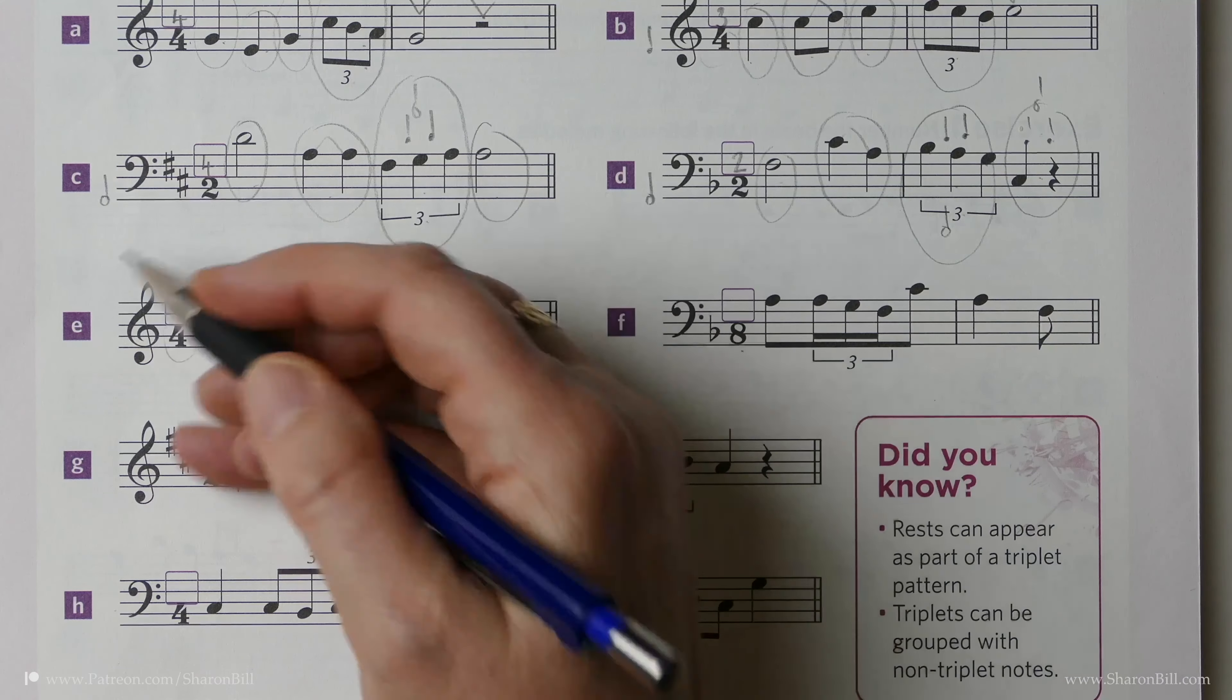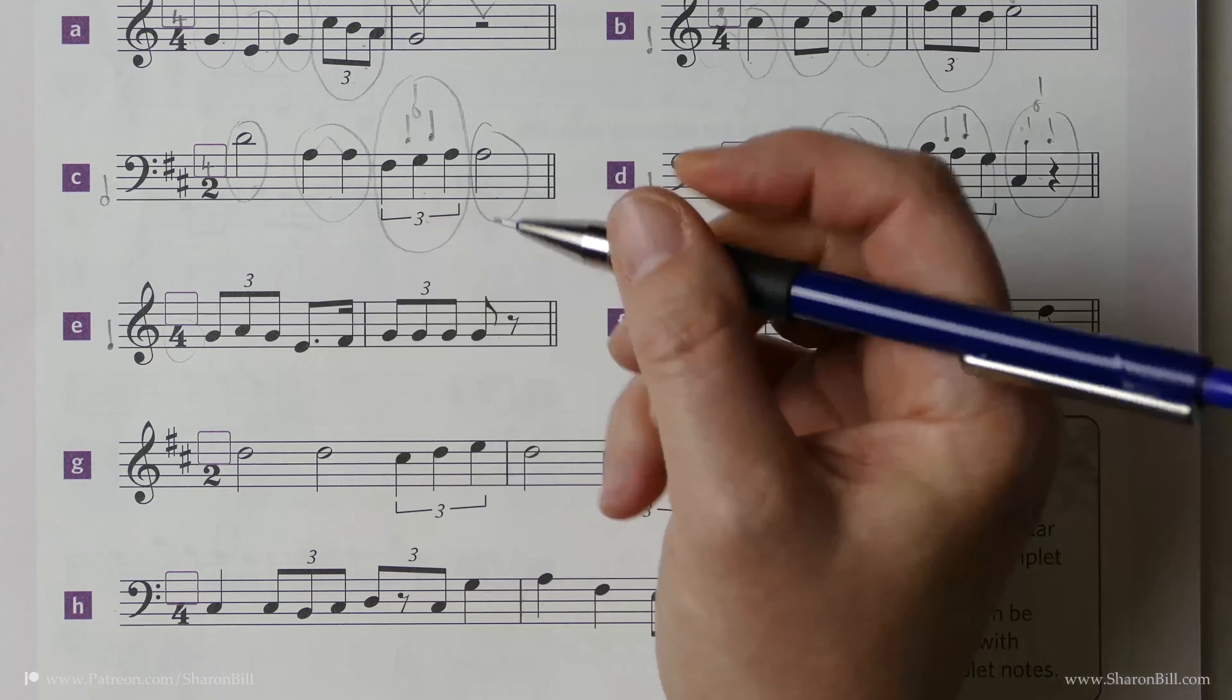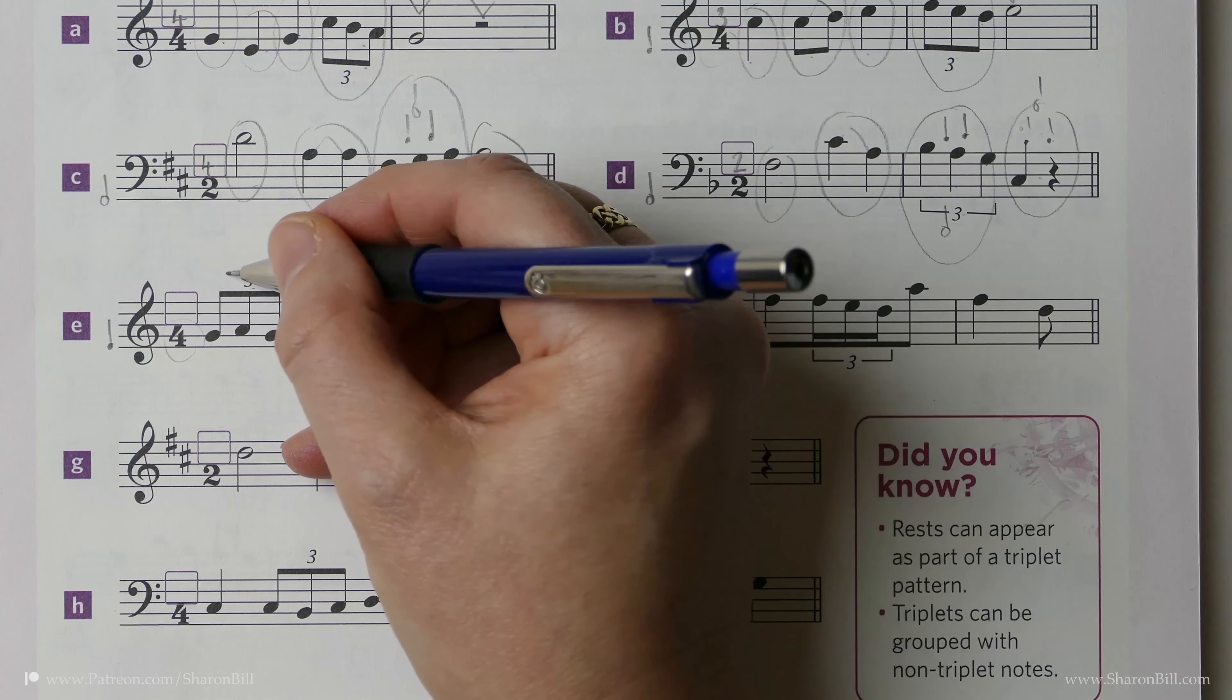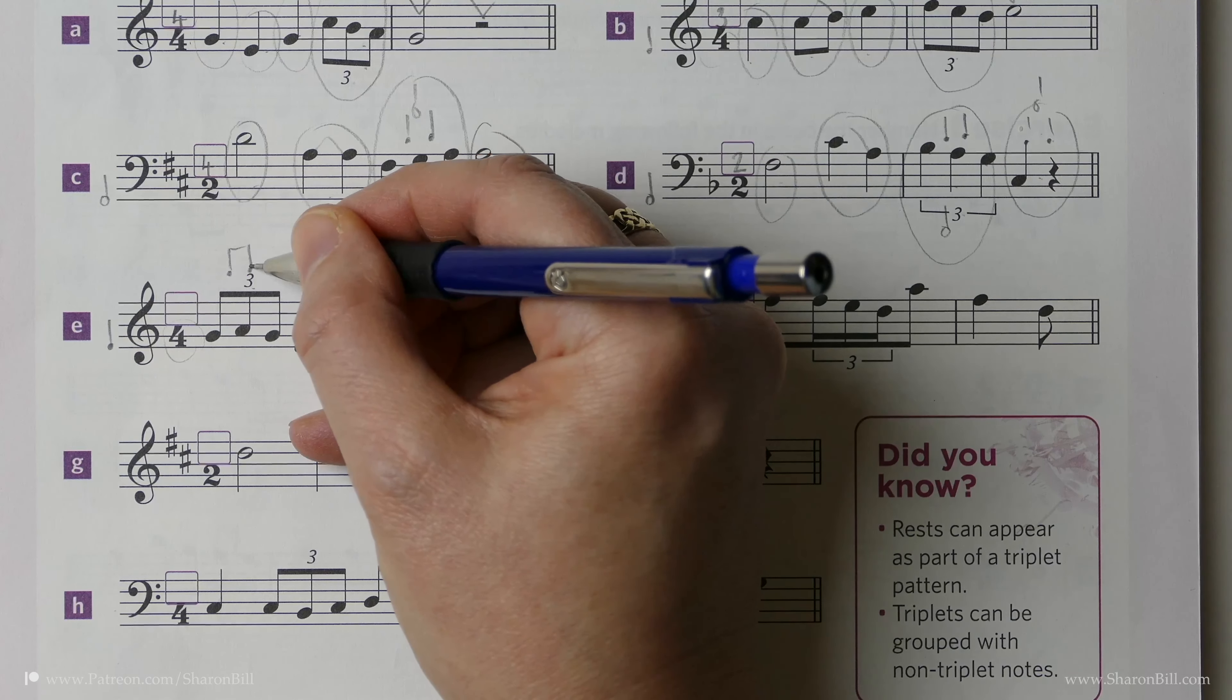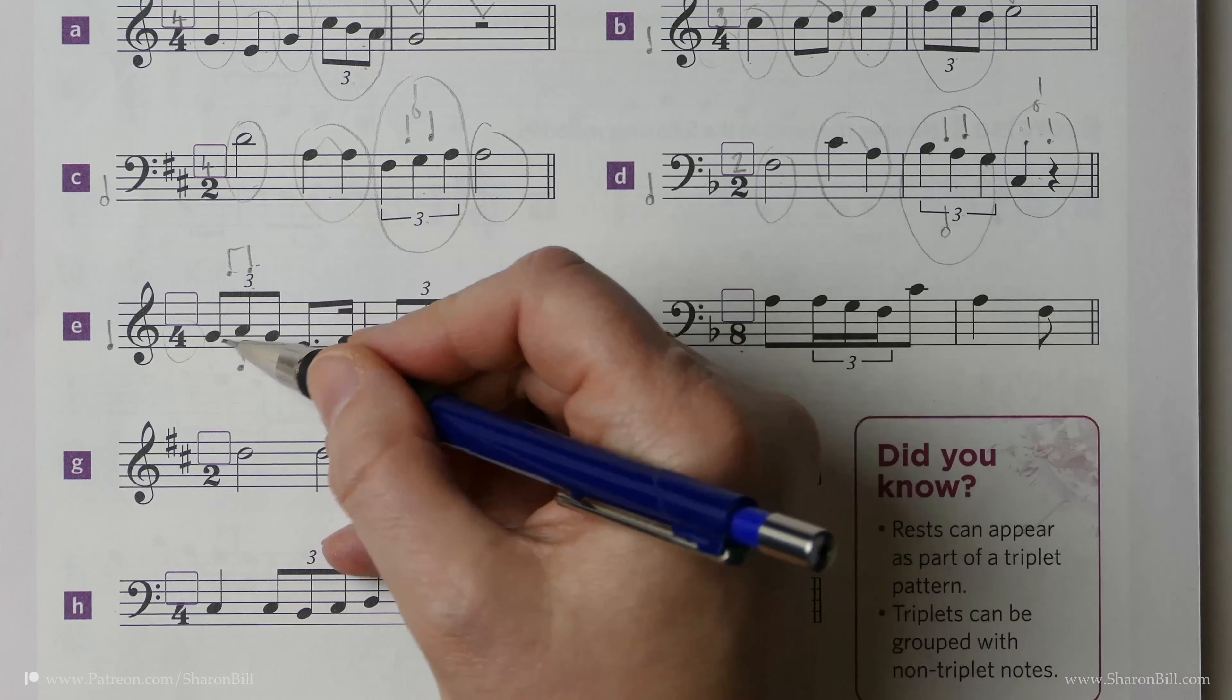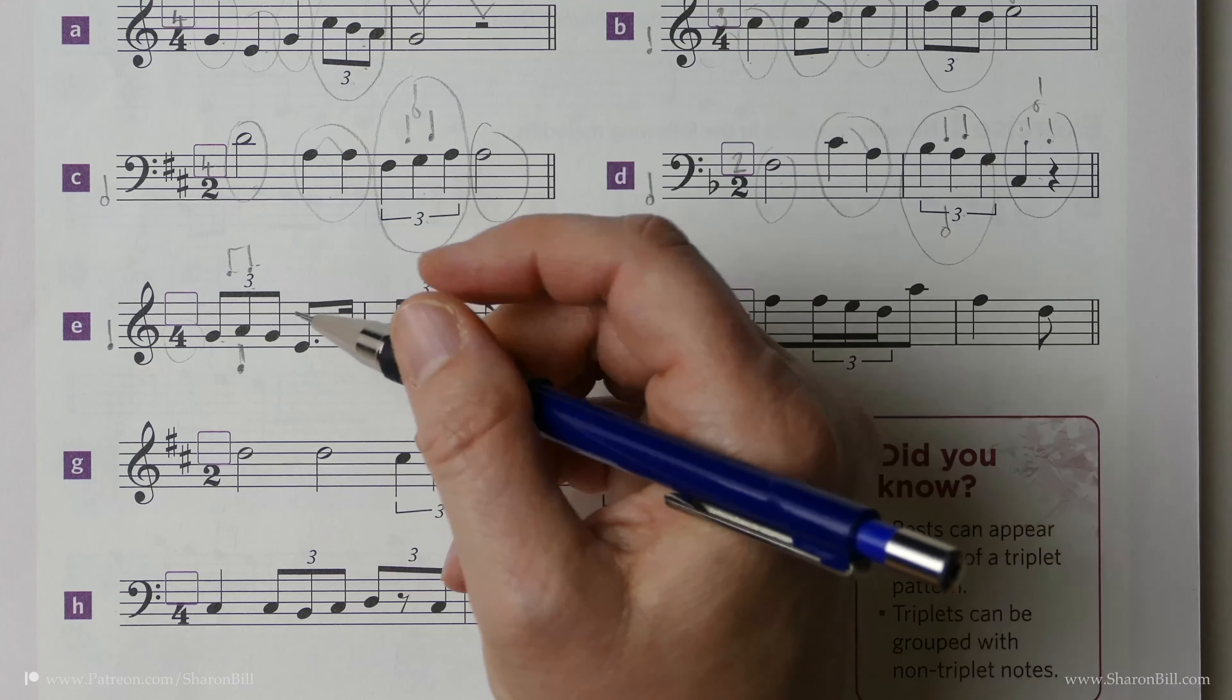Now we're back to counting in crotchet beats. So how many crotchet beats per bar? Here we have 3 quaver beats with a triplet, which means 3 quaver beats in the time of 2. And we know that 2 quaver beats is a crotchet's worth. So those 3 would be divided equally into this crotchet beat.